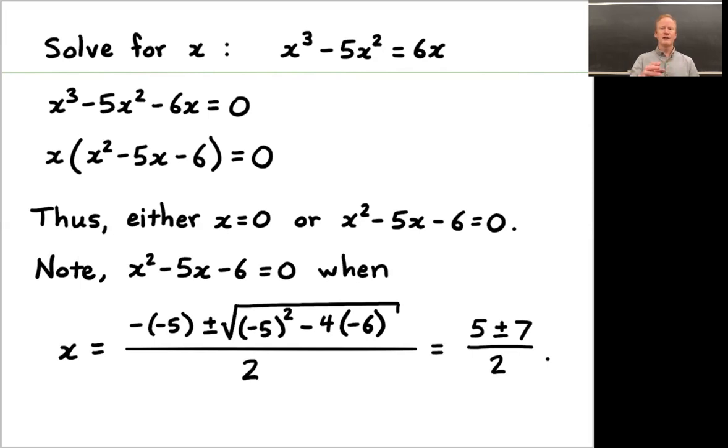Working through and simplifying out, you'll see that x is 5 plus or minus 7 divided by 2. If it's 5 plus 7, that'll be 12 divided by 2 or 6. If it's 5 minus 7, that'll be minus 2 divided by 2 or negative 1. So we picked up two more solutions. We had x equals 0 in the middle of our screen.